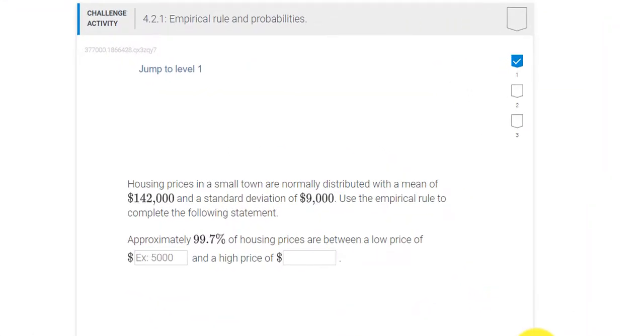Hello class. The purpose of this video is to take a look at one of the challenge activities from module 4. It says housing prices in a small town are normally distributed with a mean of $142,000 and a standard deviation of $9,000. Use the empirical rule to complete the following statement. Approximately 99.7% of the housing prices are between...